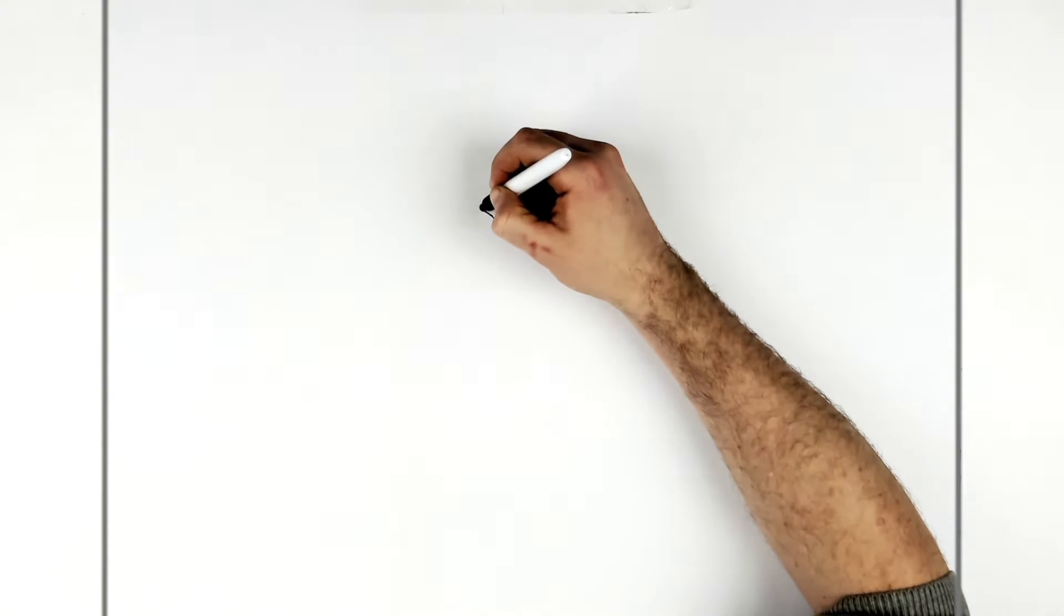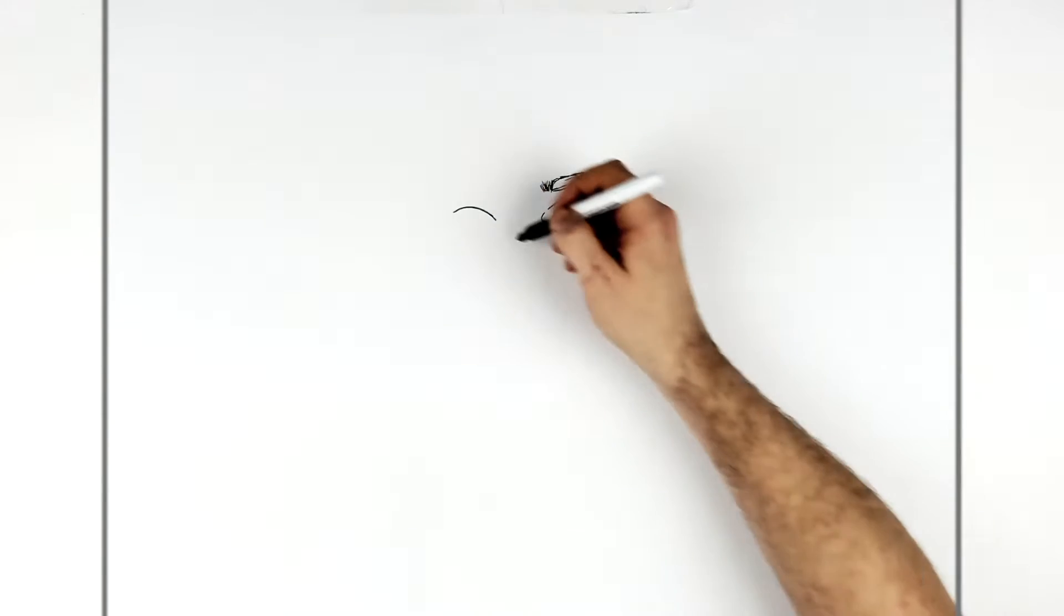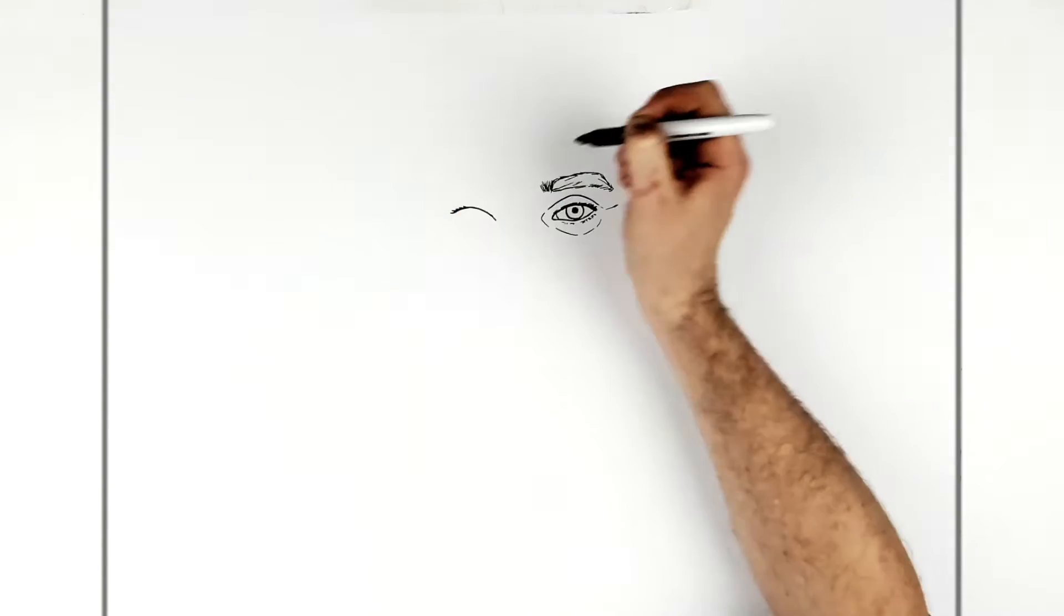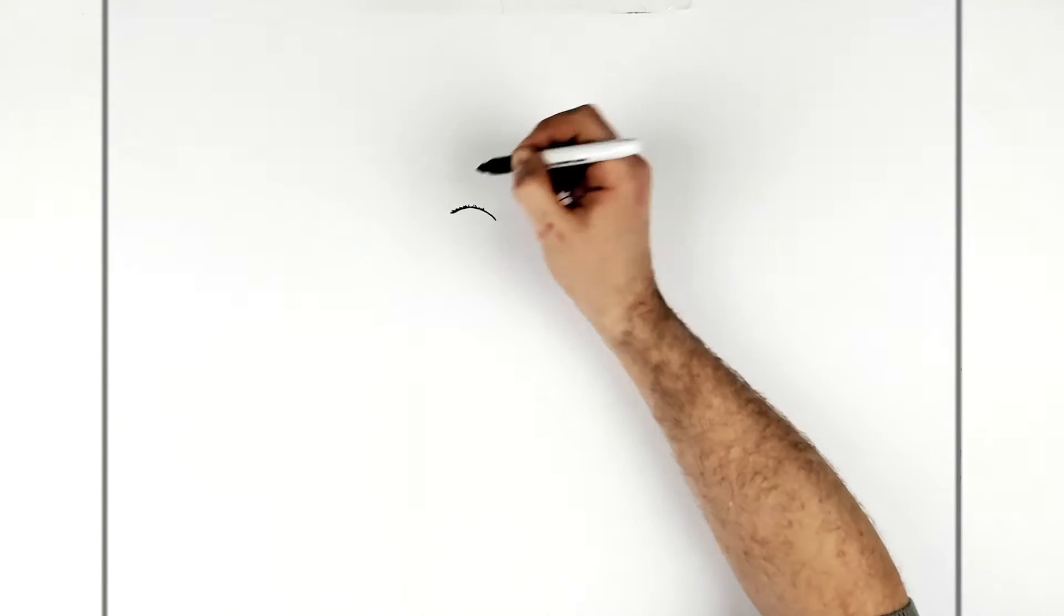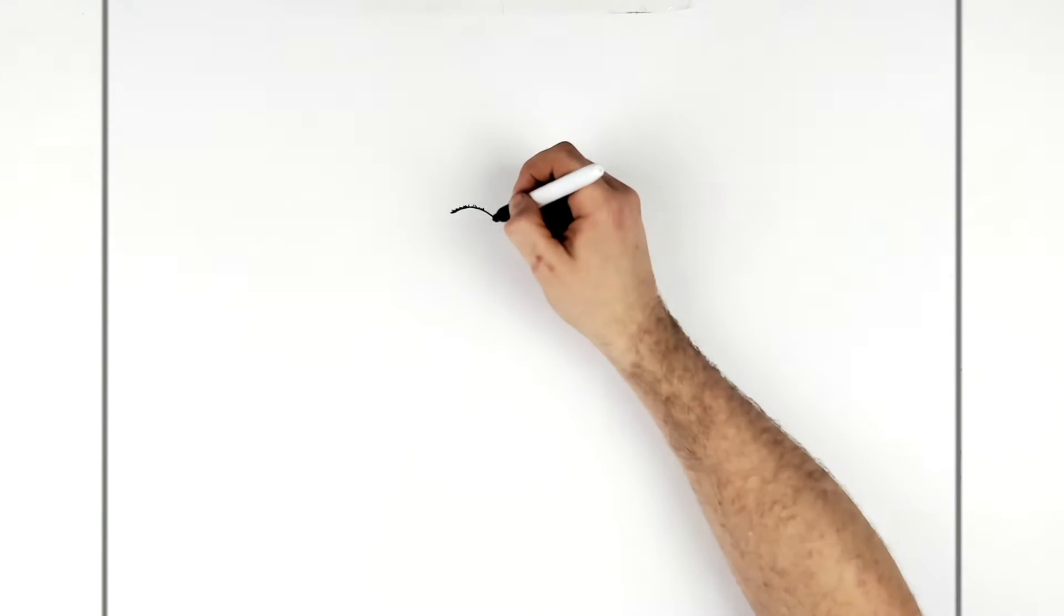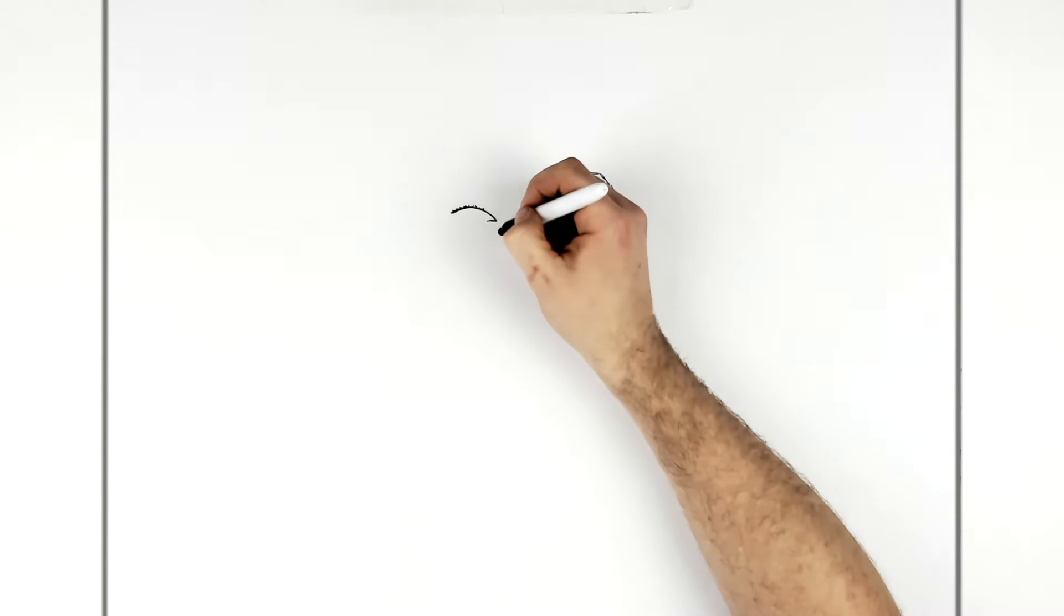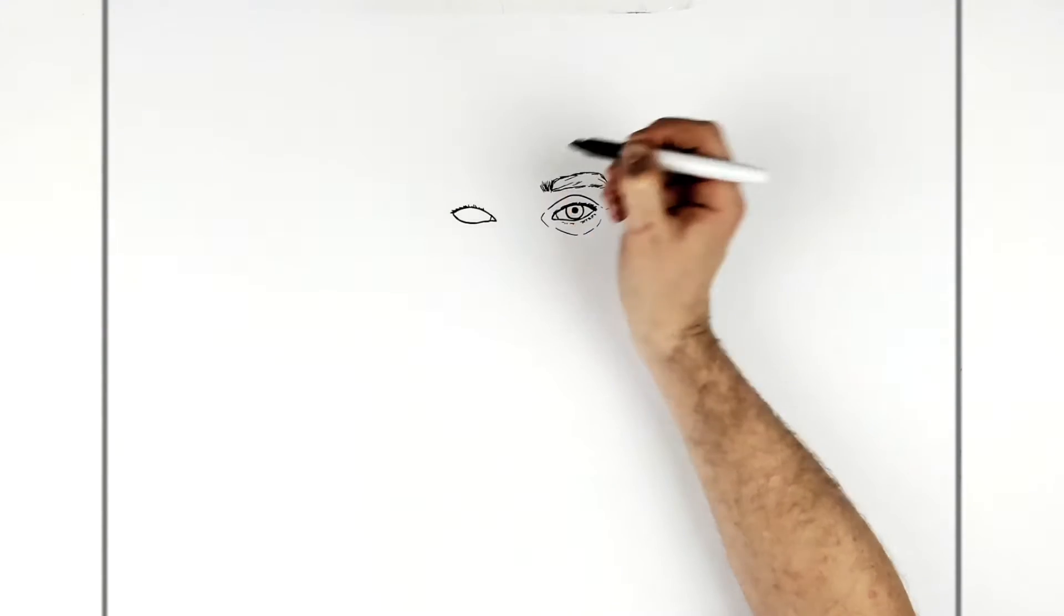And then we curve a line up and over again, like so. And we can add some eyelashes to it. And then it's tear duct here, real pointy. And then it comes across, down and curves underneath. Very small sort of thin eyes. Diagonal line there.